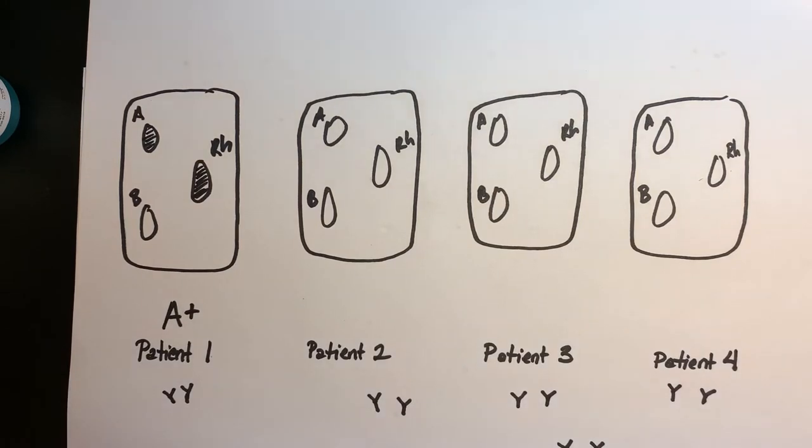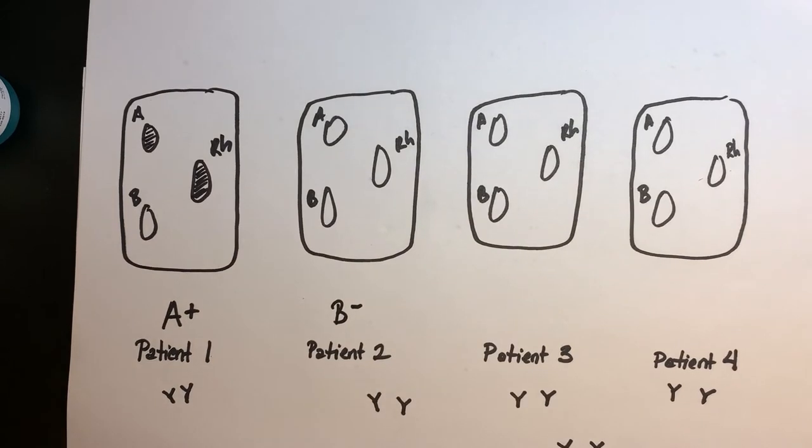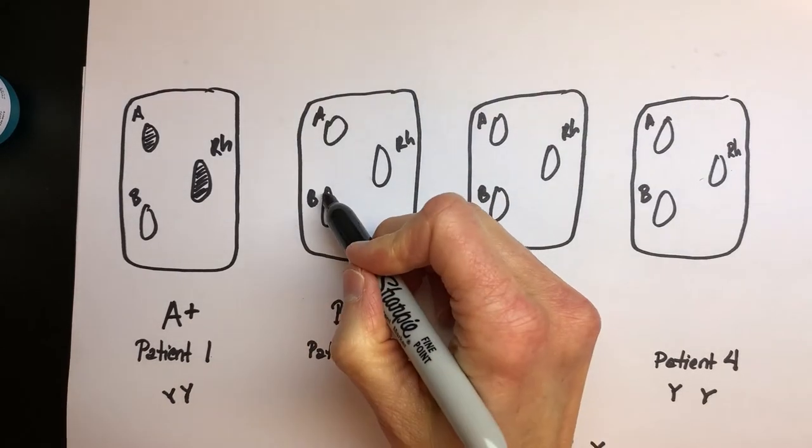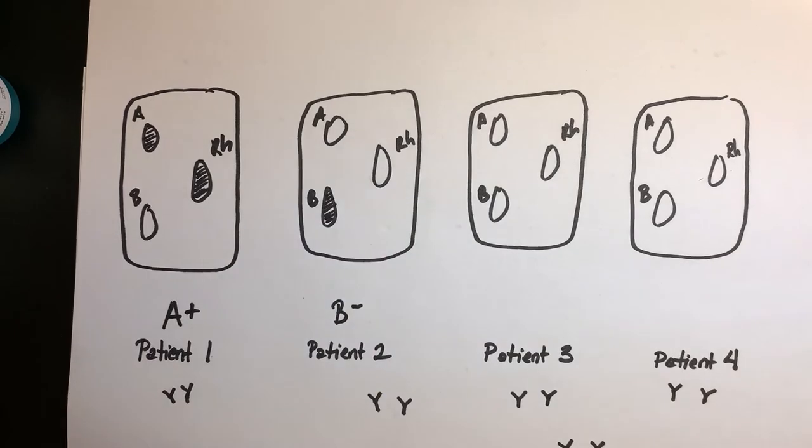All right, let's do the second patient. So the second patient was B negative. So what would I shade in for B negative? If you said you would shade in just B, right, because they don't have RH, they're negative for it, so we don't touch that. So I would just shade in the B there. All right, so that person is B negative.